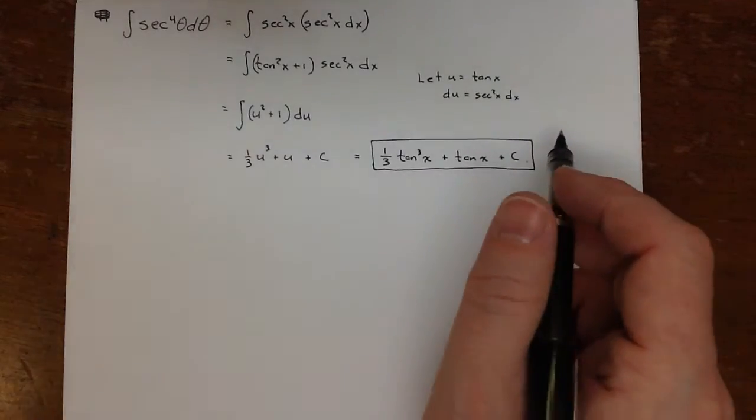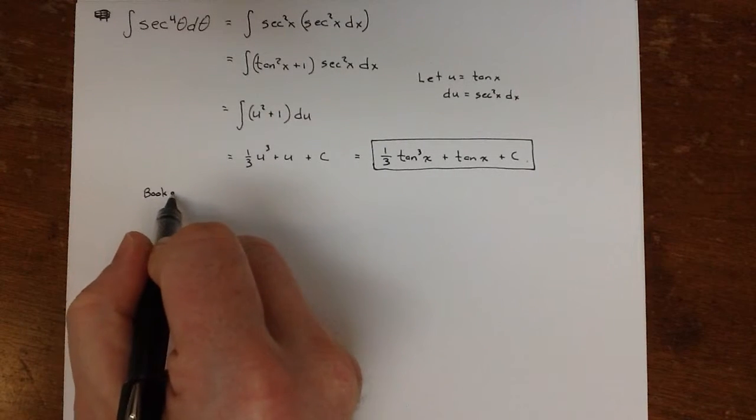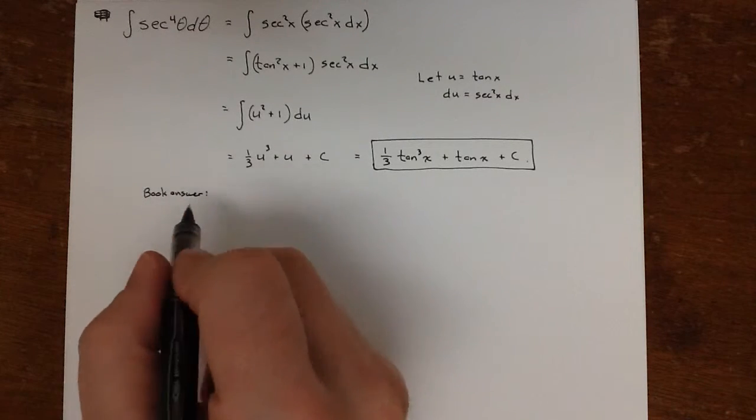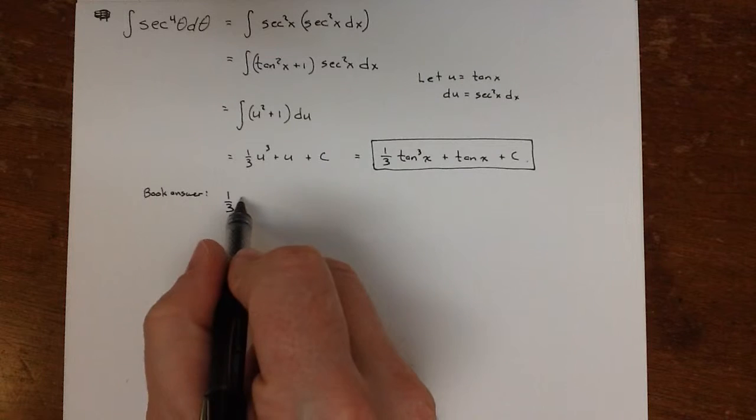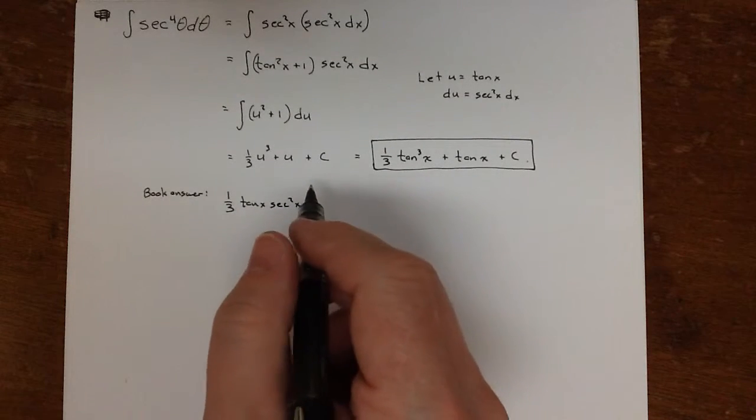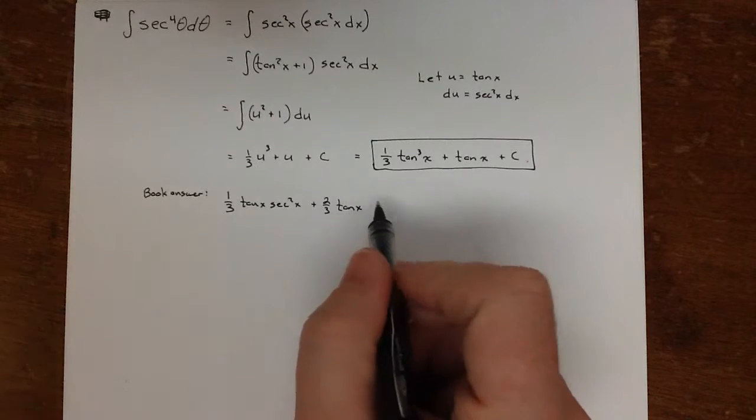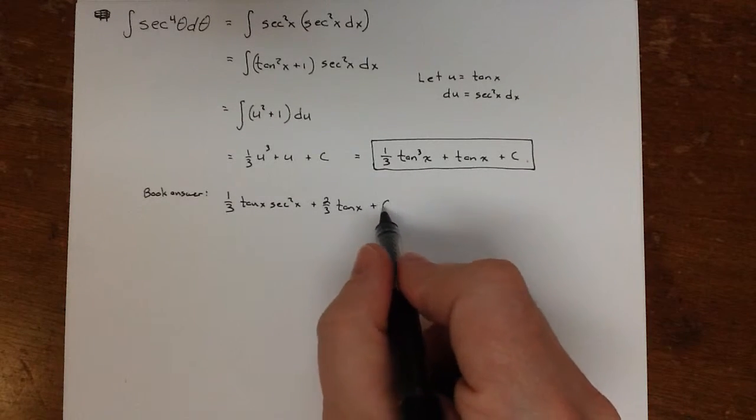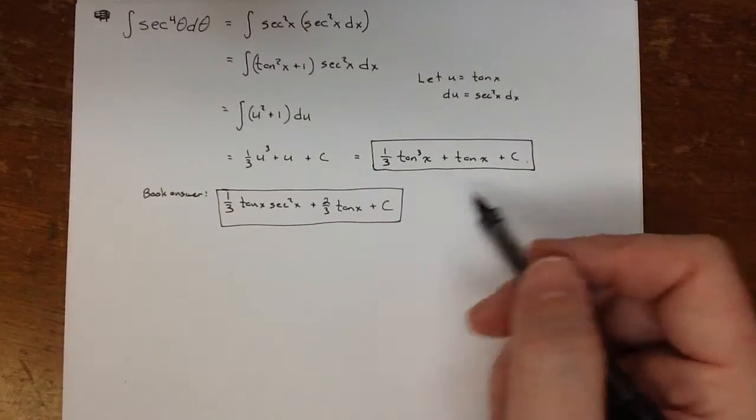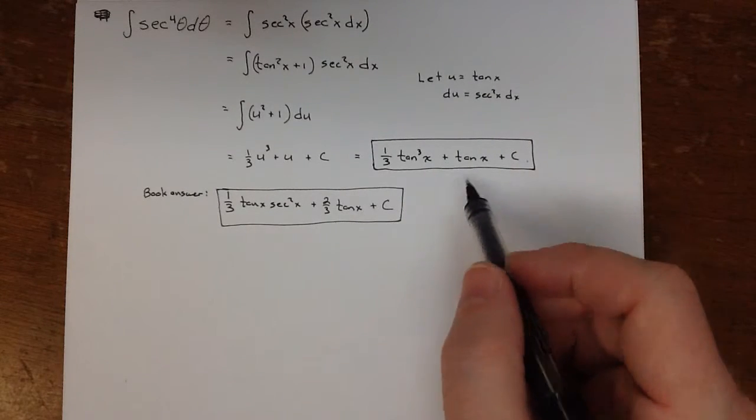However, when I checked this in the back of the textbook, and this was from a different textbook, the book answer was different. The book answer was 1/3 tan x secant squared x plus 2/3 tan x plus c. So they got this and I got that. So it would be nice if we could show that these are equivalent to each other. And I'm going to do that from up here.